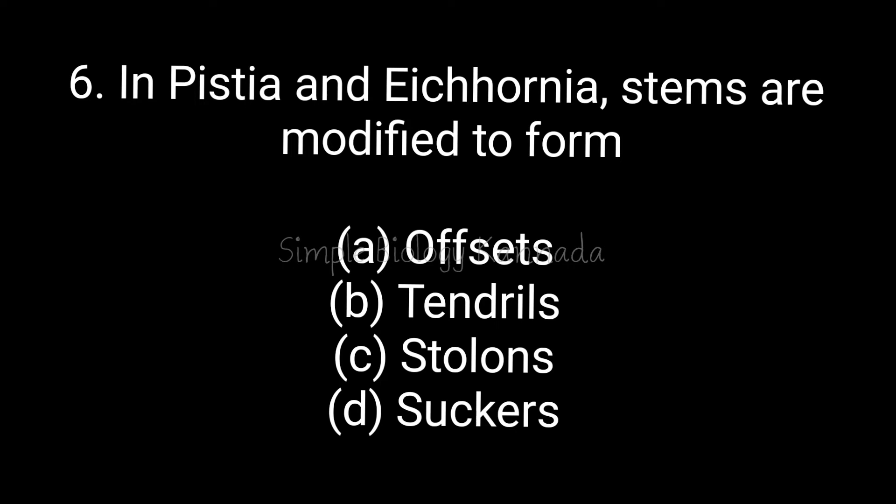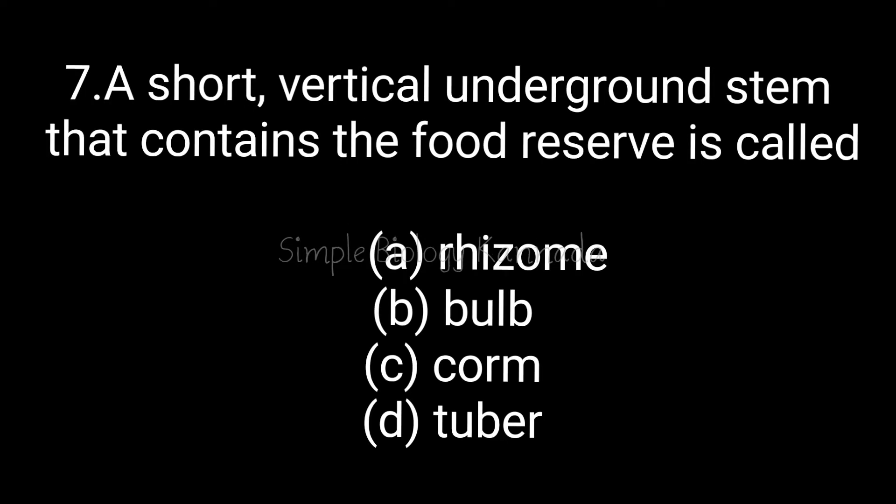In Pistia and Eichhornia, stems are modified to form — this is a sub-aerial modification. The answer is option A: offset. Offset is associated with hydrophytes, so the answer is offset.